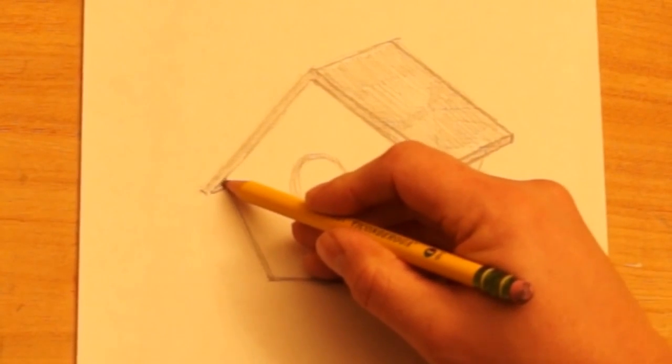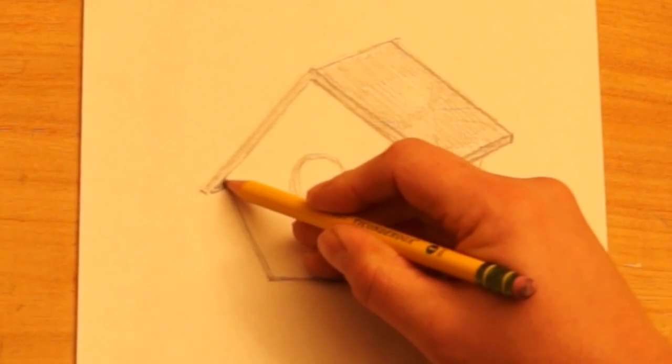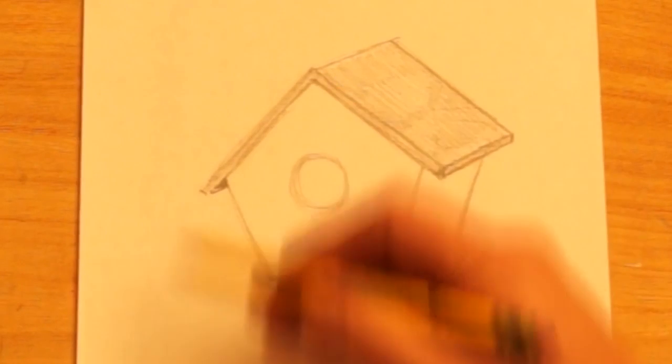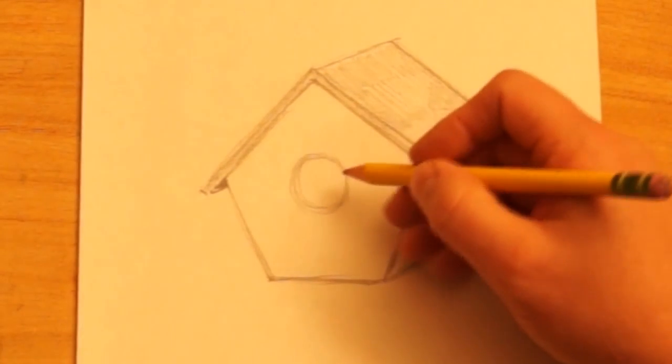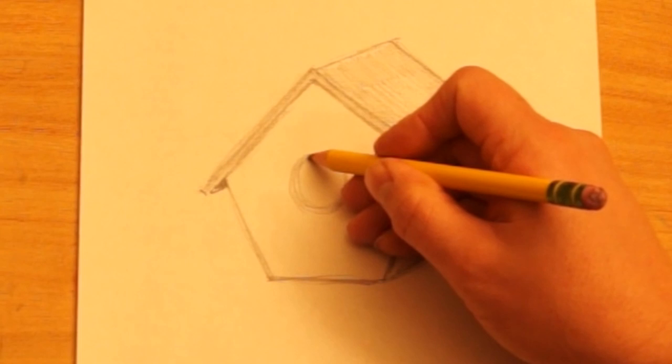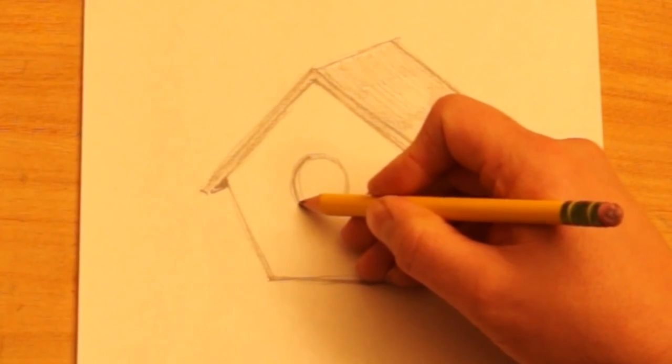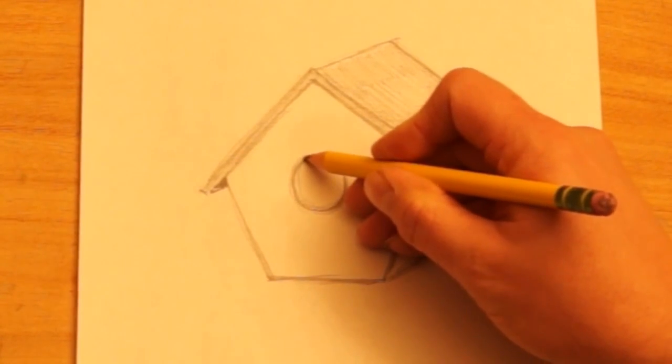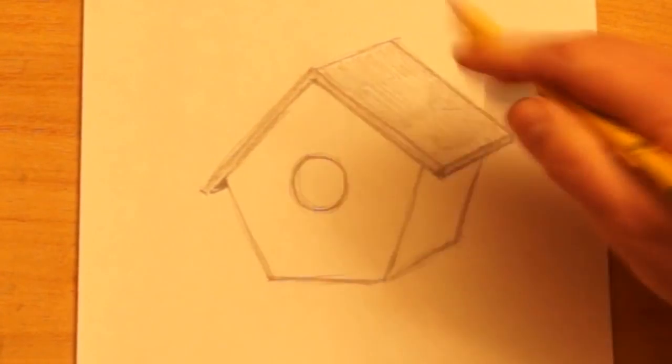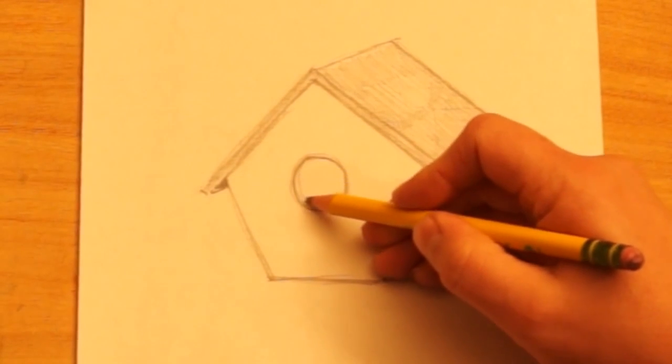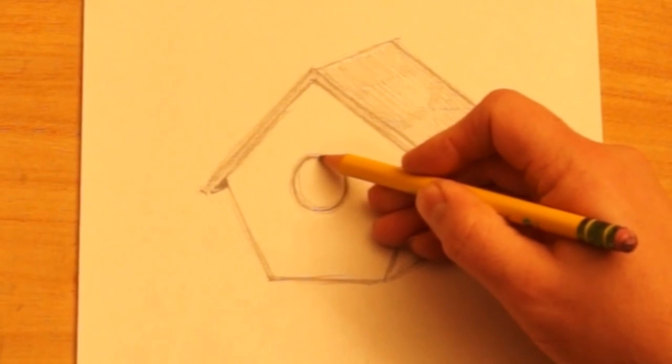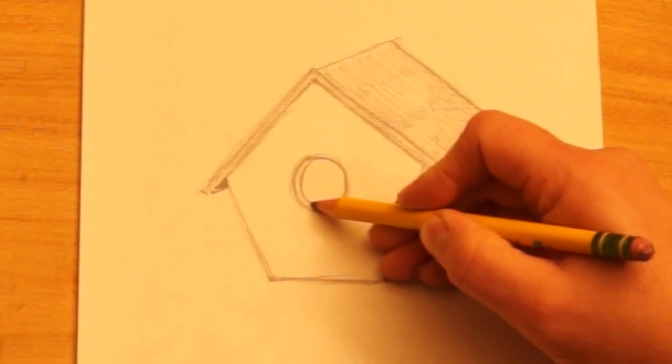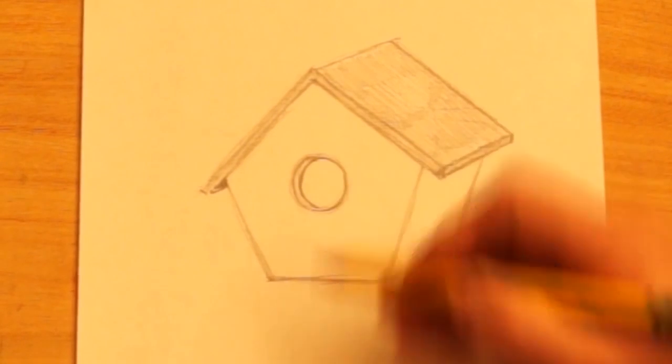And then I will shade darker though, under here, because there's shadow underneath that board there. Now, this one I did kind of sketchy. I'm going to go back and make the line, the outline darker of the entrance to the birdhouse. And because of the angle, we'll be able to see the thickness here on the inside of this board. We'll be able to see that it is a board. So I'm going to put a curve right here. Just like that.